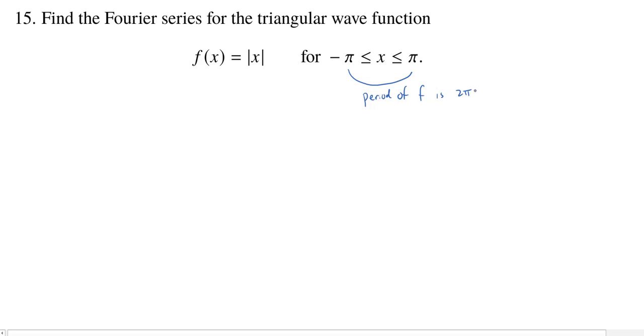So this will be important when we try to find the Fourier series because generally speaking, the Fourier series for f is given by, so let's write down the formula. We'll write it with coefficients and then I'll tell you what the coefficients are in a moment. It'll look like a naught over 2 plus a sum from 1 to infinity.